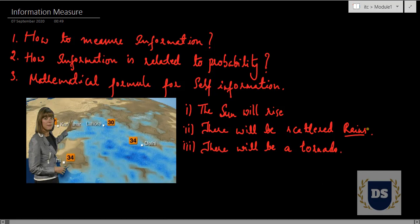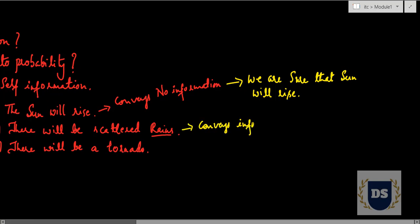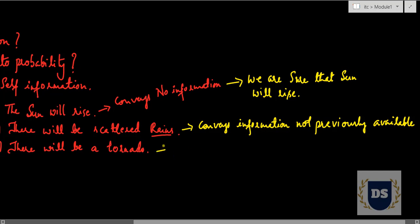Assuming there had been no previous discussion on the weather forecast, the very first message is obvious and conveys almost no information — we are pretty much sure in advance that the sun will rise. The second message provides information not previously available to us. The third statement, being very uncertain and rare, gives us the maximum information, because a tornado is very uncommon and hence it conveys maximum information.